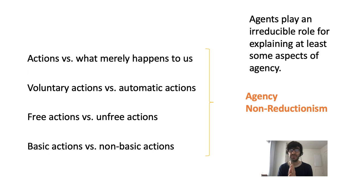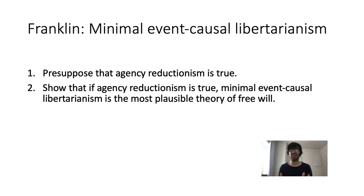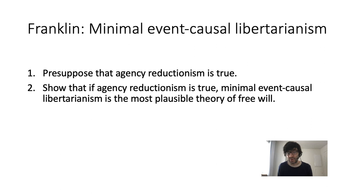This distinction is important because Franklin appeals to agency reductionism. His strategy is to presuppose that agency reductionism is true, and then, given this assumption, to show that if agency reductionism is true, then minimal event-causal libertarianism is the most plausible theory of free will. Agency reductionism is a fairly widely accepted position. There will be a third part of the lecture in which I will briefly introduce Franklin's version of libertarianism and how it relates to other versions. So I'll see you back for that soon.